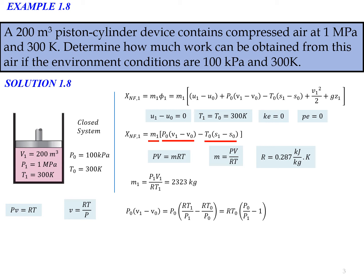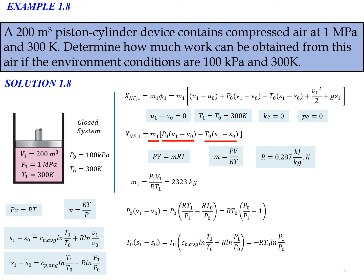Now we look at the last term, T₀(s₁ - s₀). We can rearrange this and substitute the values, including v₀/v₁, and replace all the variables in the equation. From this we get the expression for T₀(s₁ - s₀), and with all terms derived, we can now calculate the exergy of the closed system.